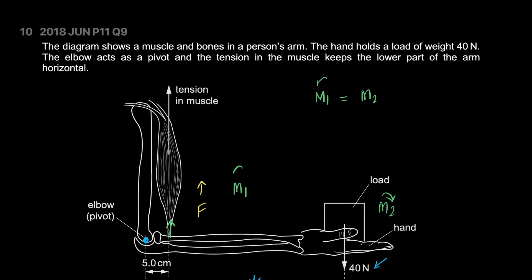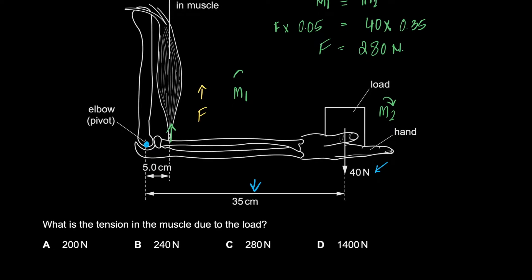Since the system is balanced, M1 equals M2. M1 is the muscle tension F times 0.05 meters (5 centimeters converted to meters). This equals 40 newtons times 0.35 meters. Solving for F gives 280 newtons. The correct answer is C.